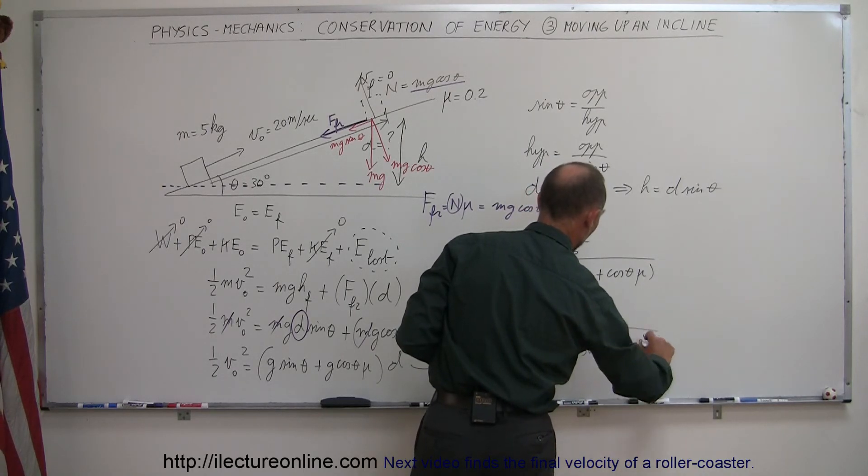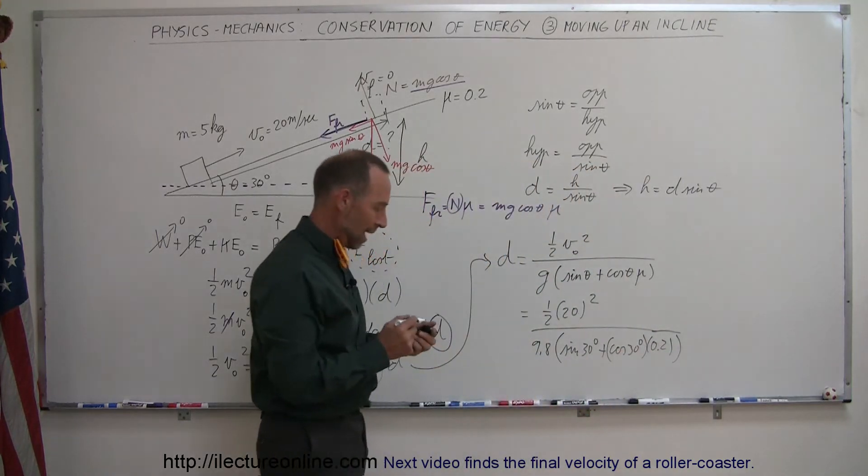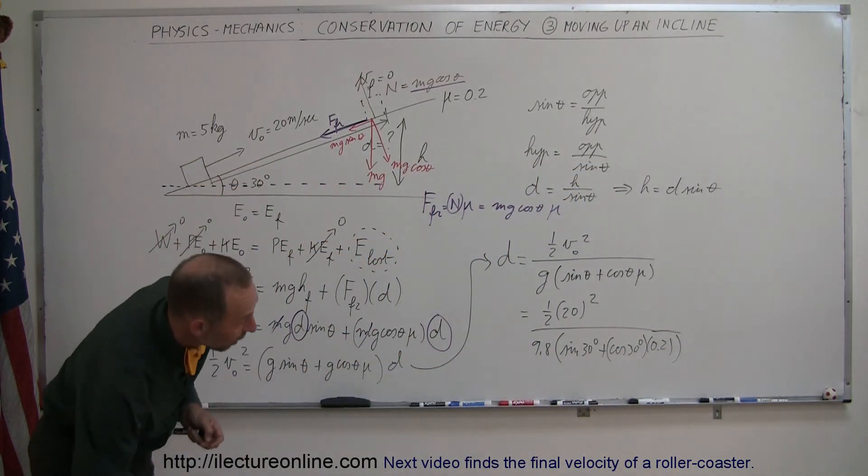It's 1/2 times 20 squared divided by 9.8 times the sine of 30 degrees plus the cosine of 30 degrees times mu, which is 0.2.